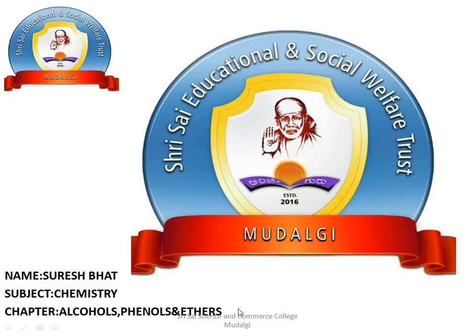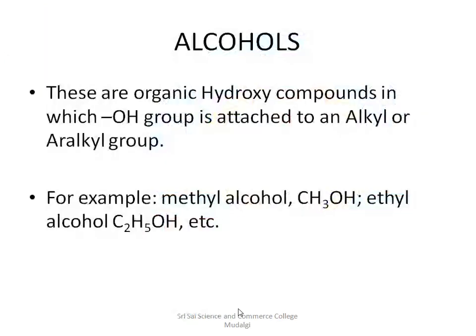Hello, dear students. Today we are going to discuss one of the organic chemistry chapters — a very important one. The name of the chapter is called alcohols, phenols, and ethers. Alcohols, phenols, and ethers are functional groups which we are sharing with respect to the first year organic chemistry chapter, and in detail we are going to study each of these concepts.